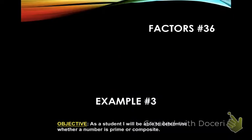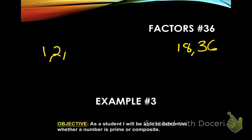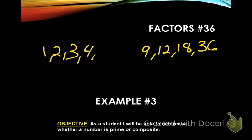The last example is thirty-six. We always start with one and thirty-six. Two — thirty-six is an even number, so two goes in: two times eighteen. Three — three and twelve. Four — four and nine. Five — no. Six — six and six, but you only need to put one six because we're only looking for the factors, the numbers you multiply together, so you only put the one six.